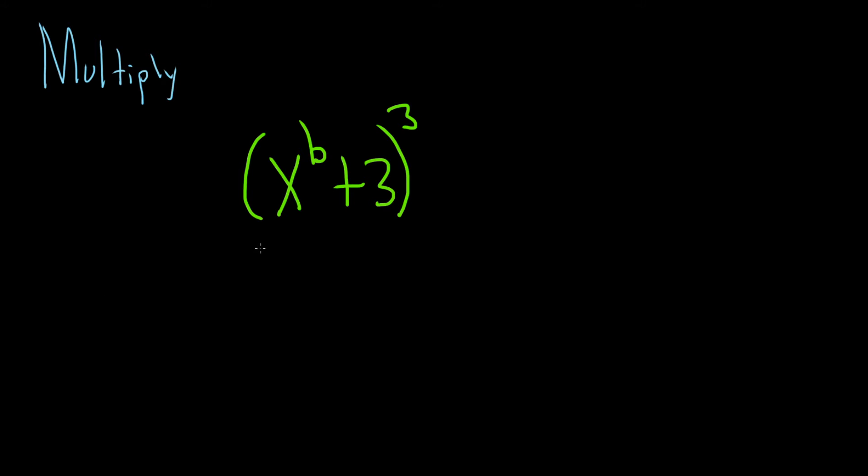In this problem, we're going to multiply this out, x to the b plus 3 cubed. So we could do it using Pascal's triangle, but let's go ahead and just grind it out the long way.